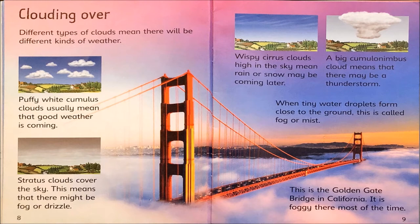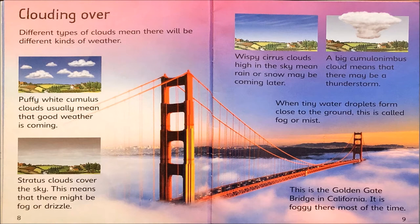Clouding over. Different types of clouds mean there will be different types of weather. Puffy, white cumulus clouds usually mean that good weather is coming. Stratus clouds cover the sky, which means that there might be fog or drizzle. Wispy cirrus clouds high in the sky mean rain or snow may be coming later. A big cumulonimbus cloud means that there may be a thunderstorm. When tiny water droplets form close to the ground, this is called fog or mist. This is the Golden Gate Bridge in California — it is foggy there most of the time.